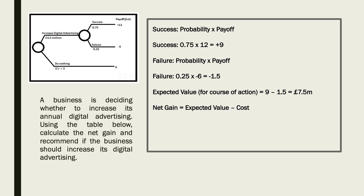Net gain is going to be the expected value — which was £7.5 million — minus the cost of that digital advertising, which is £3.5 million. So 7.5 million take away 3.5 million comes to +£4 million. Plus £4 million is considerably larger than zero, which is what you get as your EV if you do nothing.